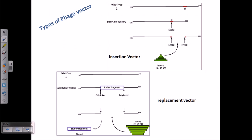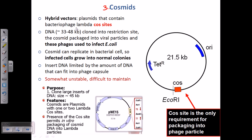Nothing is totally 100% natural about cloning vectors — we have engineered all these things. Cosmids are far more modified than phage. They are simply plasmids, resembling plasmids in having an origin of replication, one selectable marker, and a multiple cloning site. But in addition, they have a unique modification: a cos site added onto the plasmid, which is why they are termed cosmids.